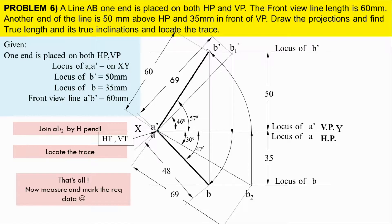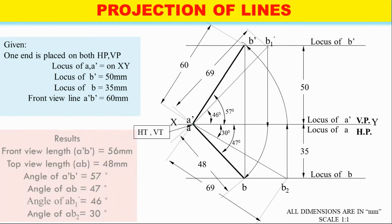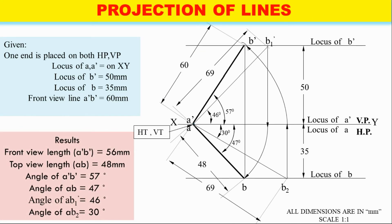For dimensioning: the extension line is perpendicular to the object, drawn with 2H pencil. The dimensioning line is parallel to the object, drawn with H pencil. Write all the answers in the description box. That's all.